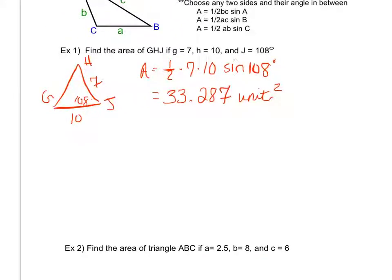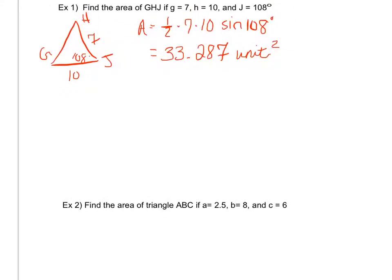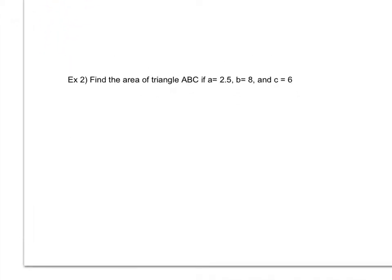Let's look at the second example. I'm finding the area of triangle ABC. First, I'm going to draw it. I'm told a = 2.5, b = 8, and c = 6. Sides a, b, and c are across from angles A, B, and C. Notice I'm not given an in-between angle. In fact, I'm not given any angle at all. So I'm going to have to either use law of sines or law of cosines.